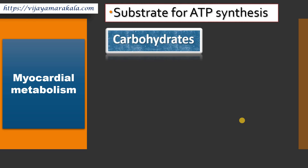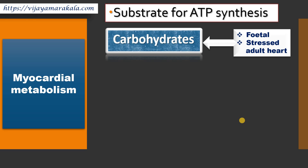First and foremost, the substrate is carbohydrates. Carbohydrates are the predominant substrate for myocardial ATP in the fetal heart. The fetus utilizes carbohydrates for ATP in the myocardium. Also in adults, when there is stress or ischemia, the heart utilizes most of the carbohydrates. But in normal adults, carbohydrate utilization for ATP is less when compared to fatty acids.